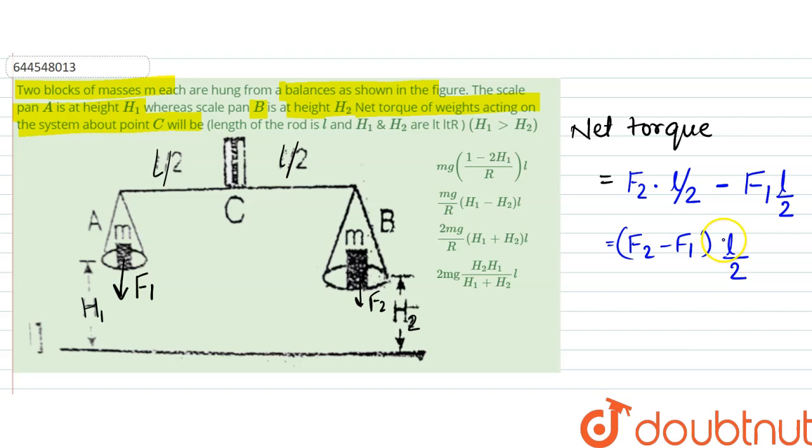That would be the net torque since F2 can be written as MG gravitational acceleration at height 2.